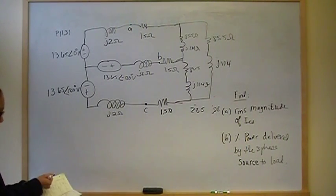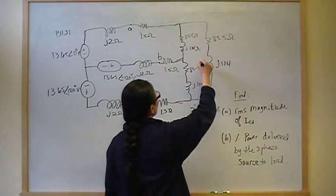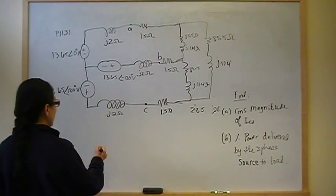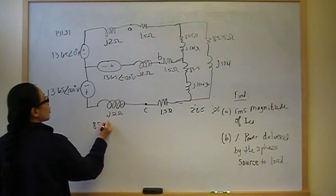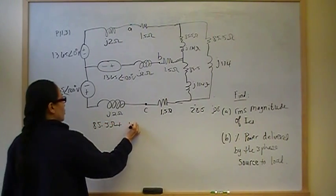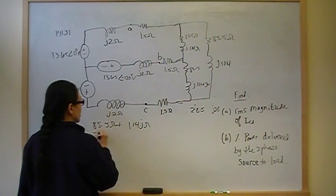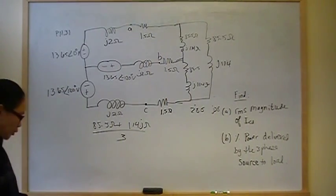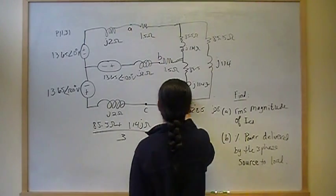So the first thing we want to do is we want to find the star equivalent of that delta connected load. And that impedance is going to be 85.5 ohms plus J114 ohms, and divide all that by three. When you do that, you should come up with 28.5 plus J38 ohms as the star connected equivalent.